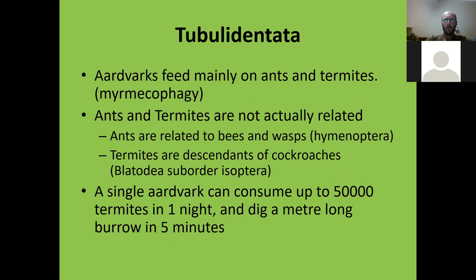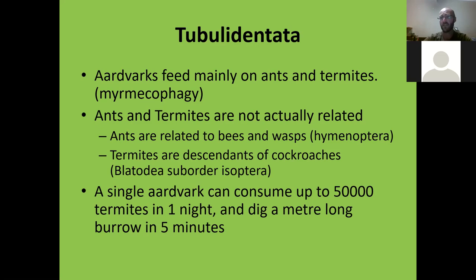Aardvarks feed mainly on ants and termites — myrmecophagous. Ants and termites are not actually related: ants are Hymenoptera, related to bees and wasps, while termites are actually descendants of cockroaches, order Blattodea, suborder Isoptera. A single aardvark can consume up to 50,000 termites in one night and can dig a meter-long burrow in five minutes. They are walking tanks — incredible animals.